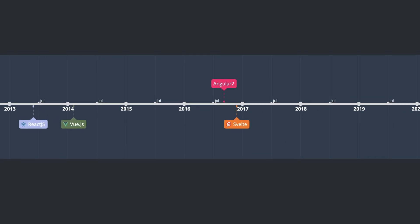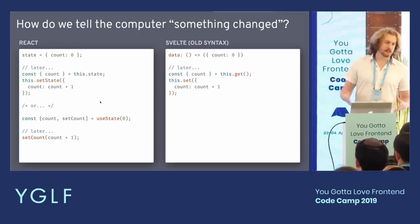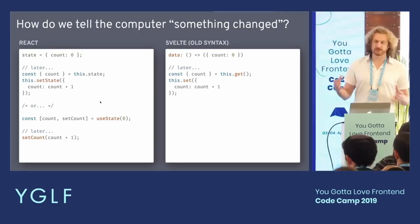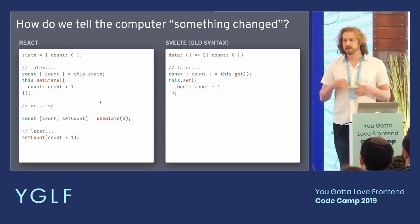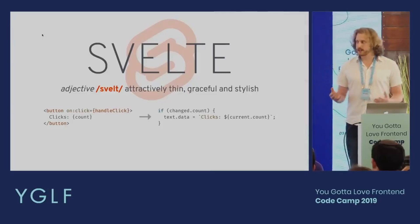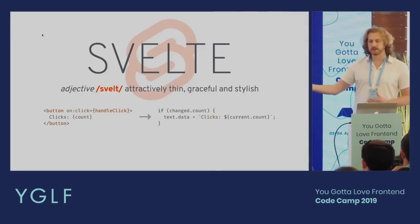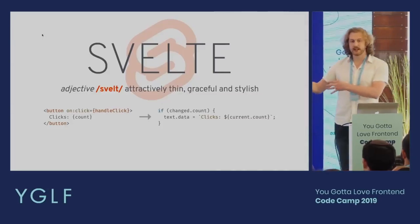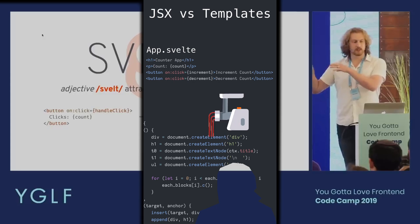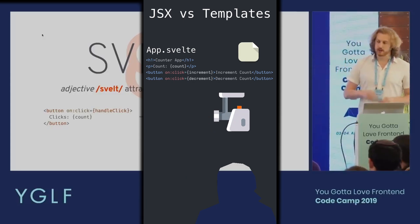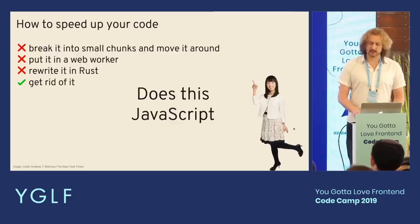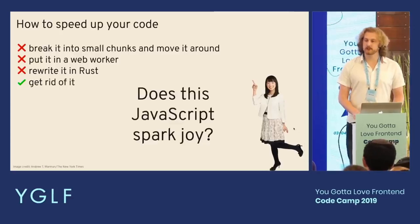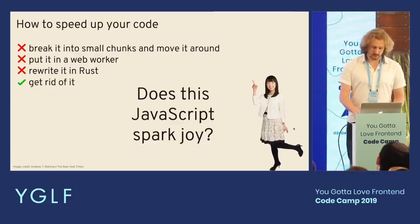Reactivity in Svelte was achieved through reactive assignments. When the state — a variable — of a component was updated, Svelte would automatically rerun the component's code to reflect the changes in the DOM. Unlike frameworks like React, Svelte 1.0 didn't use a virtual DOM. Instead, it compiled components into highly efficient imperative code that directly updated the DOM, making updates very quickly and efficiently.